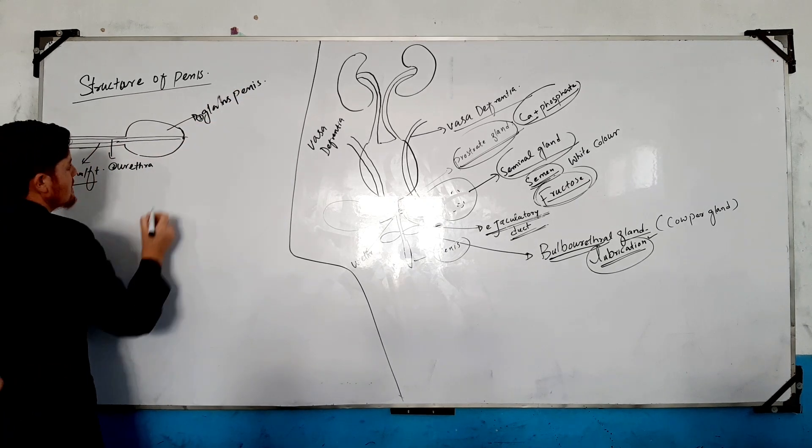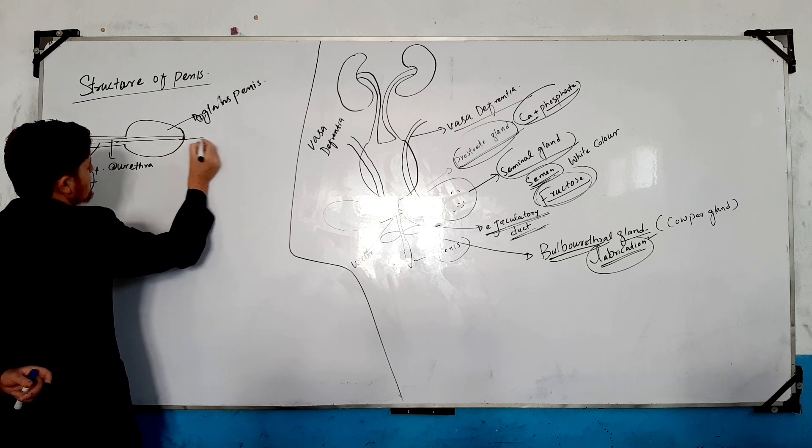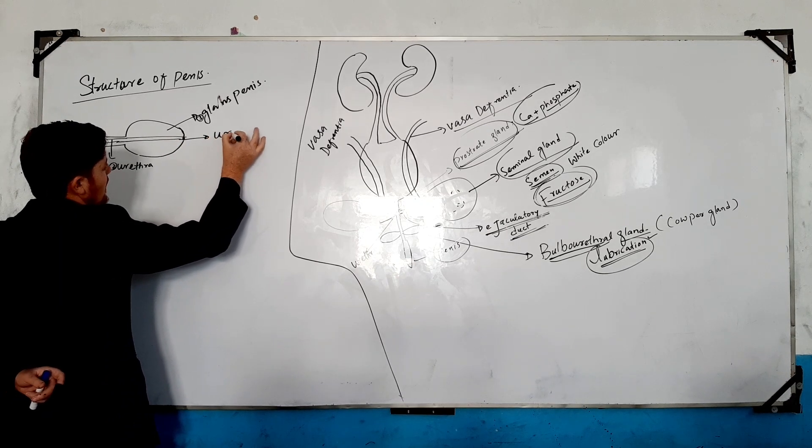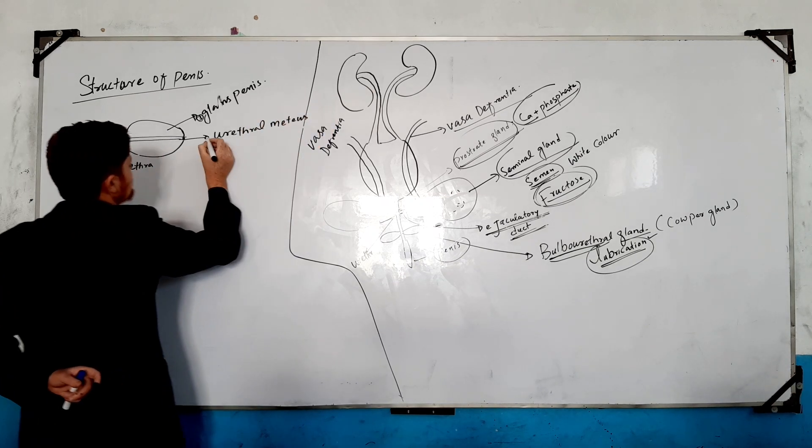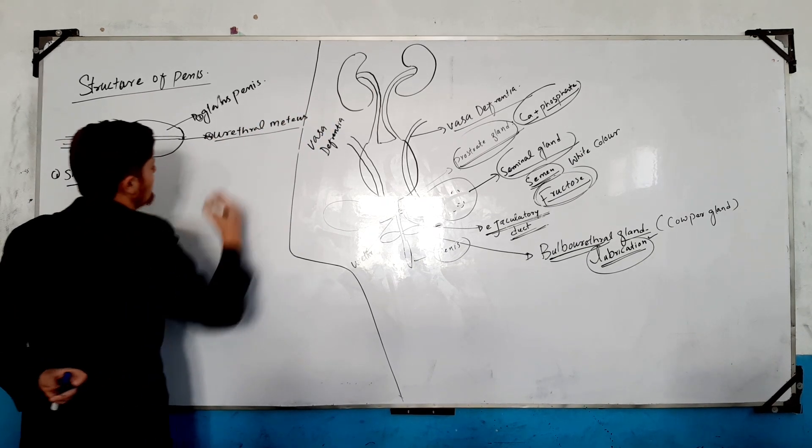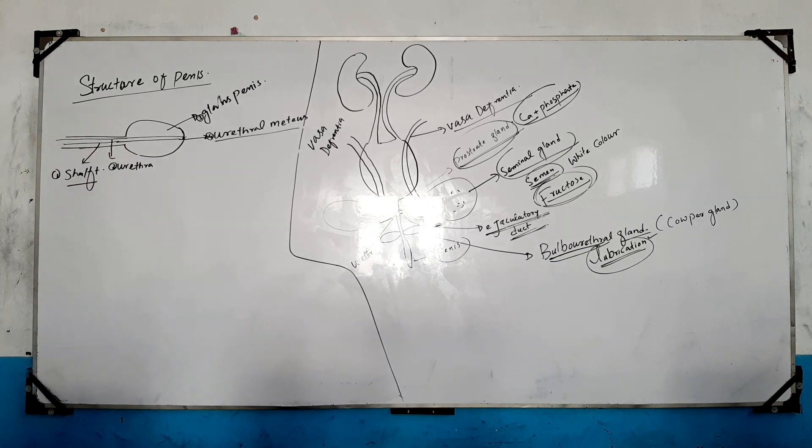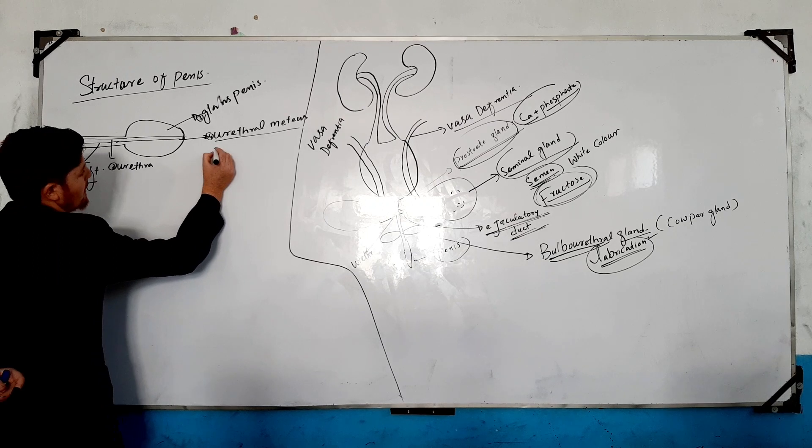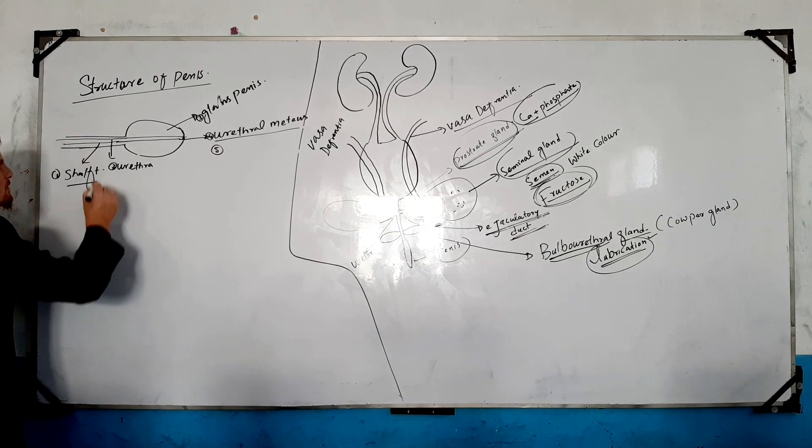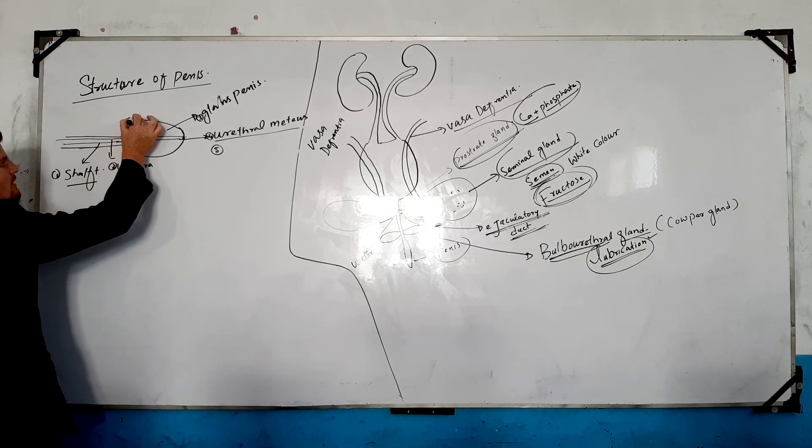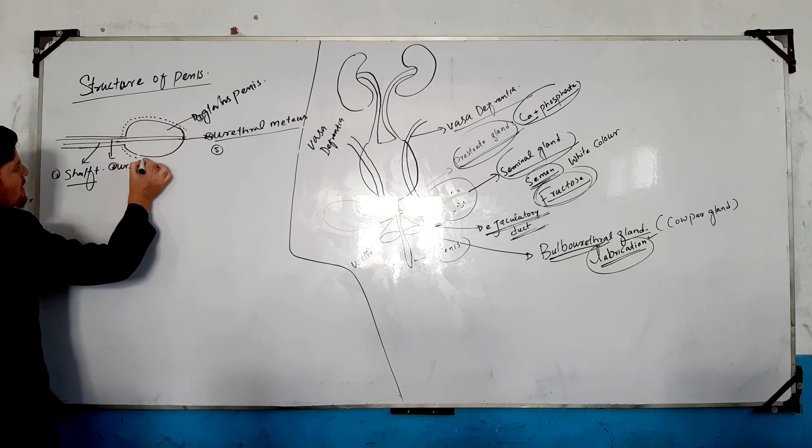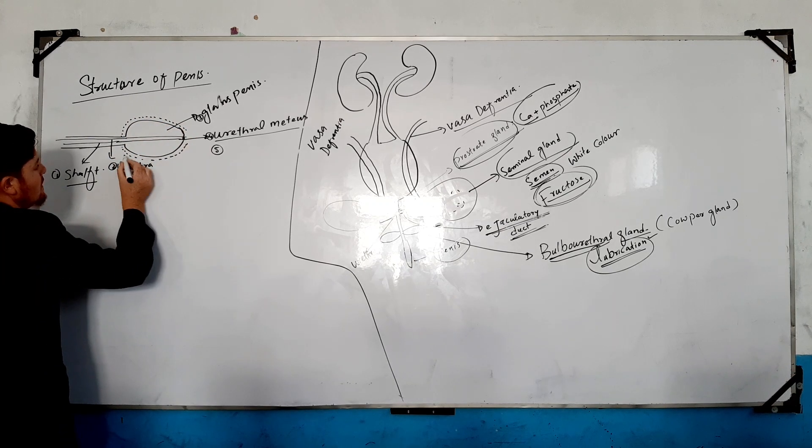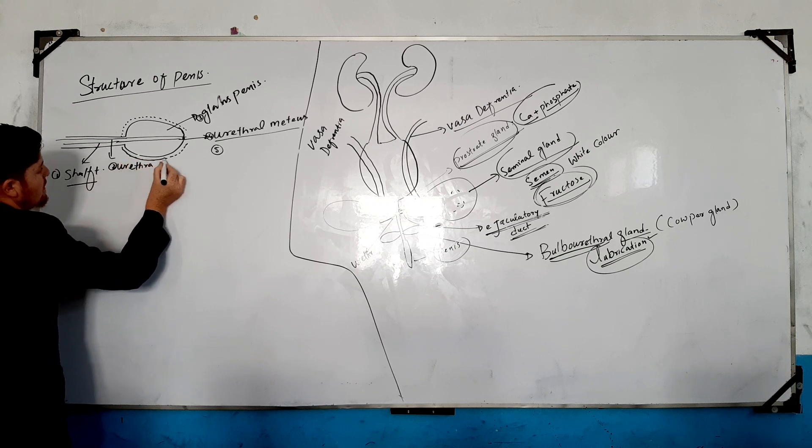This one is the urethral meatus. Next one is the penile urethra and the skin.